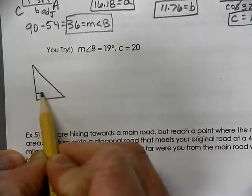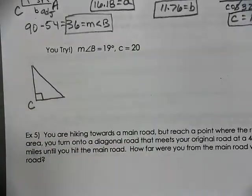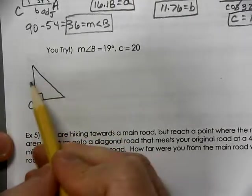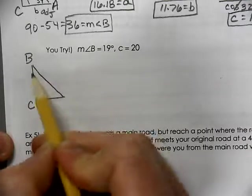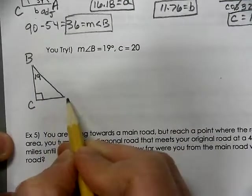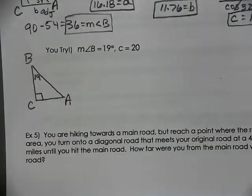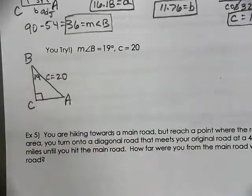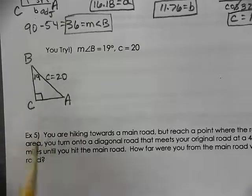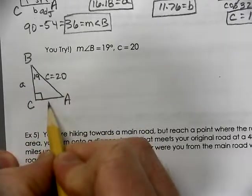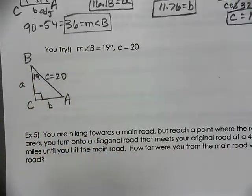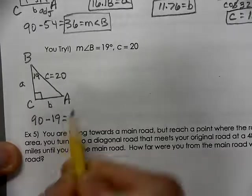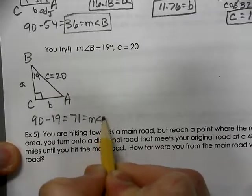We would make our right triangle. Remember we talked about C. This is very important. C is the right angle. It doesn't matter what the other two would be. It looks like this one might be smaller, so let's call it the 19. This one looks a little bit bigger, so let's call it the other angle. So now we need to find angle A. We know what side C is. And we need to find side A and side B. Remember that side A is always across from A, and side B is always across from B. So 90 minus 19 gives us 71. And that's the measurement of angle A.